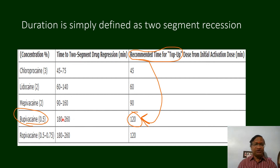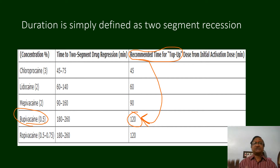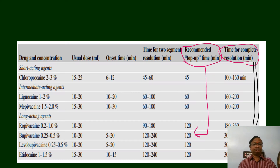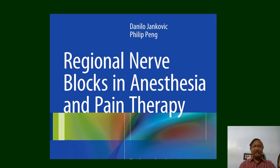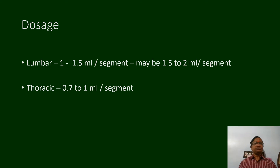If you give a top-up after 260 minutes or three and a half hours, after the two-segment recession has occurred, your top-up may not work as ideally as expected. The recommended complete resolution time is 360 minutes, while the top-up time may be 320 minutes — approximately two to two and a half hours for bupivacaine. This is from Janković's Regional Anesthesia and Nerve Blocks in Anesthesia, edition 23.